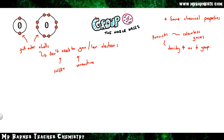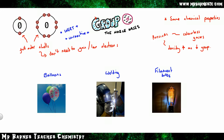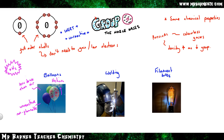These properties make noble gases useful for three things: balloons, welding, and filament bulbs. Helium is used in party and hot air balloons because it is less dense than air, unreactive, and non-flammable — unlike hydrogen, which is highly flammable. The reason helium is unreactive is because it has a full outer shell and doesn't need to gain or lose any electrons.